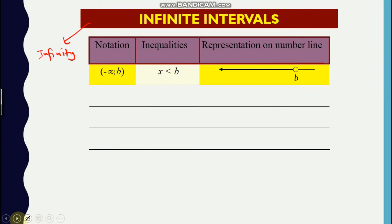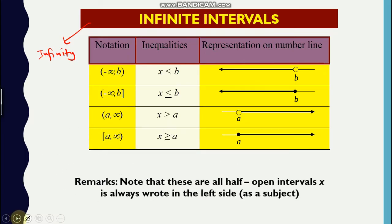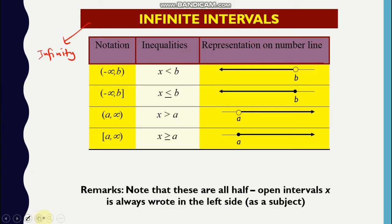Okay, so representation on number line should be with an arrow like that. Same goes with that, but because we have a closed interval, that's why we should denote that as a full dot circle. Accordingly would be to the right for the one with bigger or greater values.